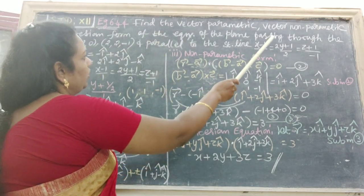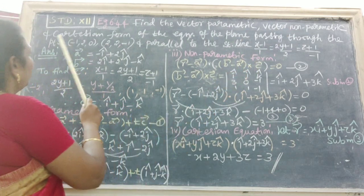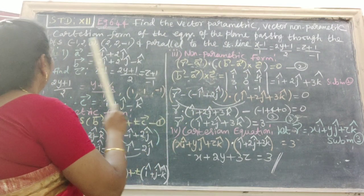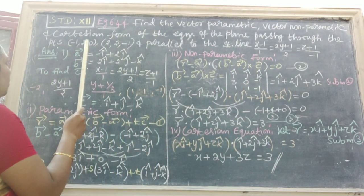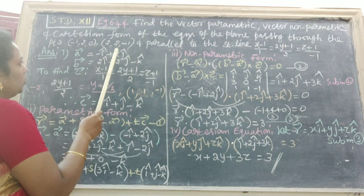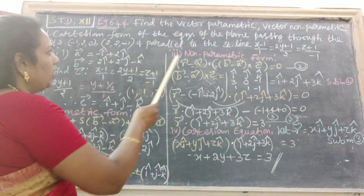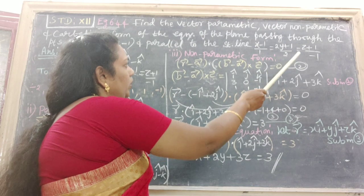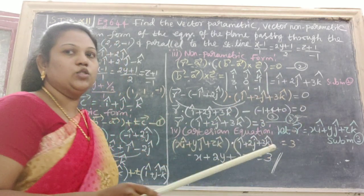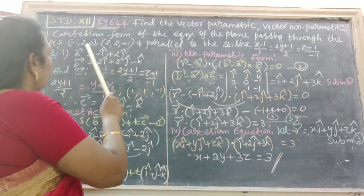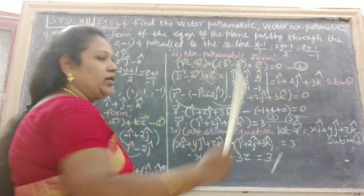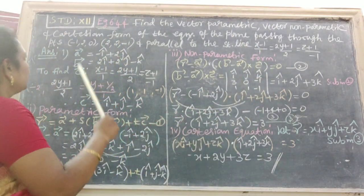Find the vector parametric, non-parametric, and Cartesian form of the equation of the plane passing through the points (-1, 2, 0) and (2, 2, -1), and parallel to the straight line (x-1)/1 = (2y+1)/2 = (z+1)/(-1). Two points and one vector, the denominator is vector. Therefore, this is type 2.